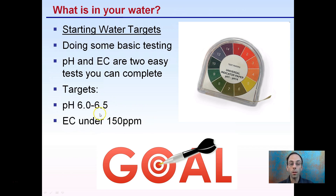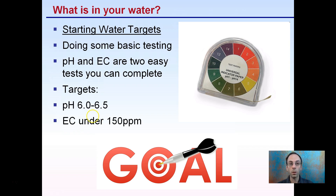The reason you want a low EC — and this is why RO or reverse osmosis water is so revered by many growers — is that the lower the EC is when you're adding nutrients, it allows you to add more fertilizer without background parts per million clogging up the availability of sites in the water you're using to irrigate.